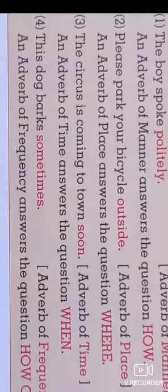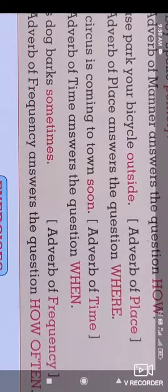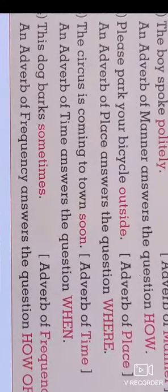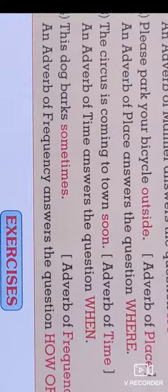'The circus is coming to town soon.' This is an adverb of time. An adverb of time answers the question 'when.' 'The dog barks sometimes' — this is an adverb of frequency. An adverb of frequency answers the question 'how often.'